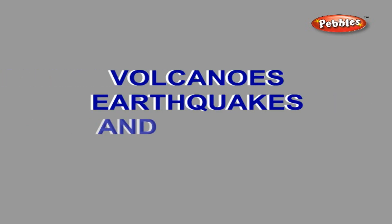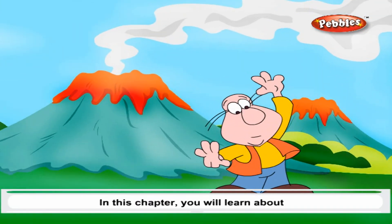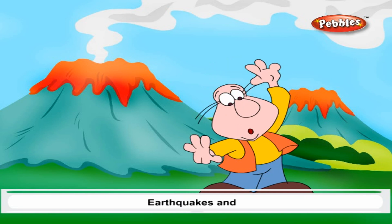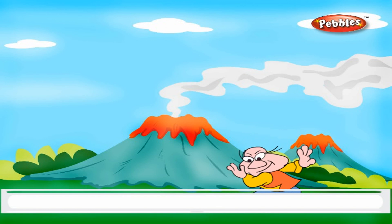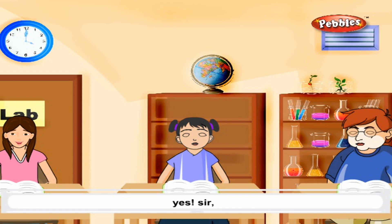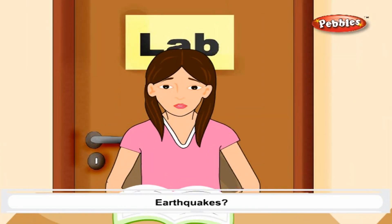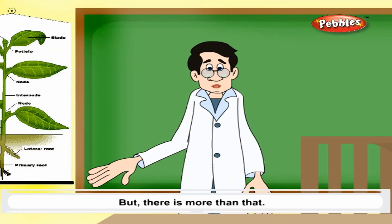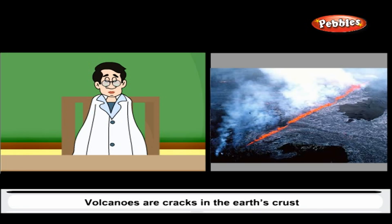Volcanoes, earthquakes, and tidal waves. In this chapter you will learn about volcanoes, earthquakes, and tidal waves. Now let's get back to earth. Yes sir, what are natural calamities? Earthquakes? Yes, but there's more than that. Volcanoes.